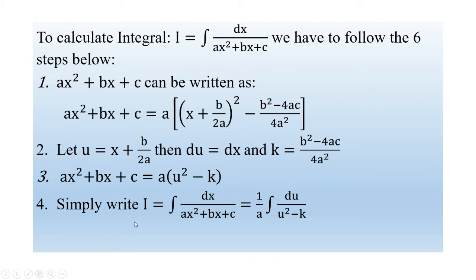In step four, we substitute this polynomial back into the integral. The integral I = ∫ dh / (ah² + bh + c) becomes (1/a) ∫ du / (u² - k), since we factor out a from the denominator and use du = dh.